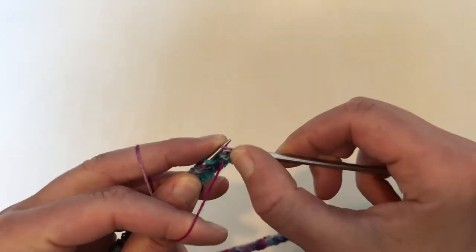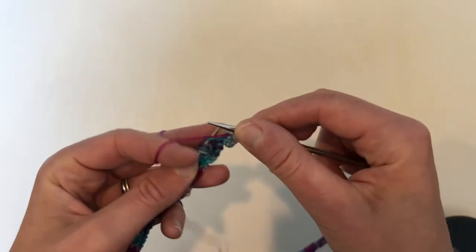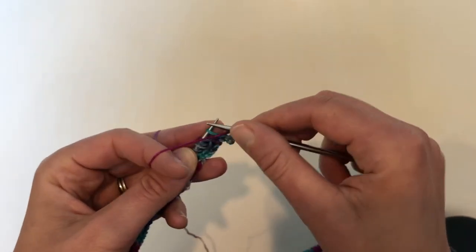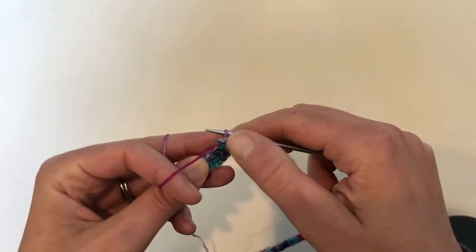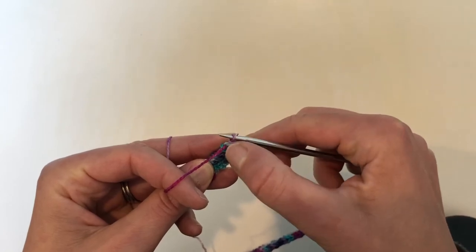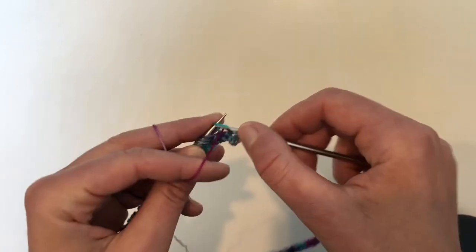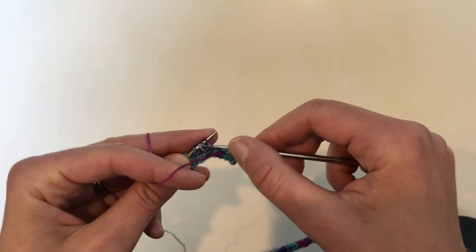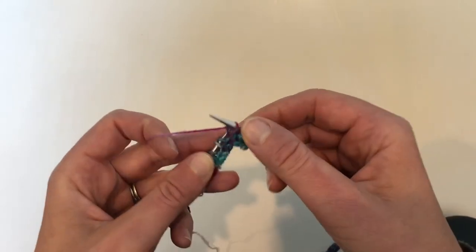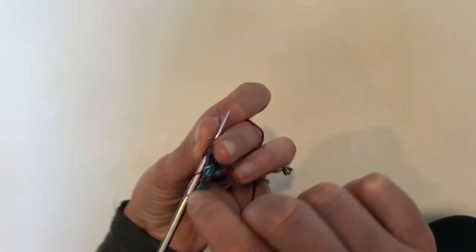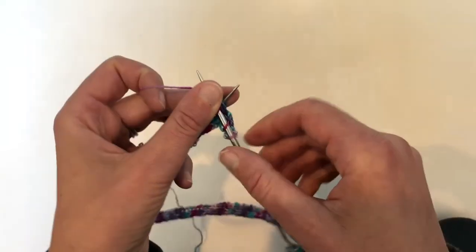And now, since in this pattern I'm just going straight into purling a whole row, that's okay. If your pattern stitch was different, you might want to do something different with that first stitch. But for me, I'm just going to purl along, and then you'll have a nice I-cord edging.